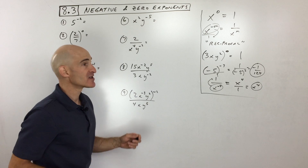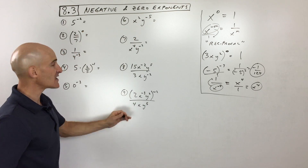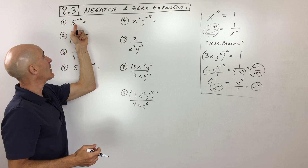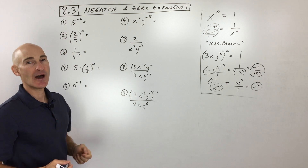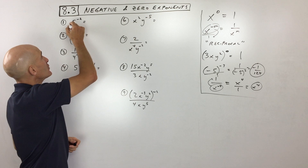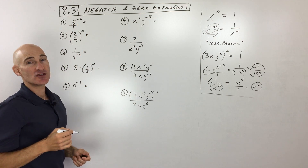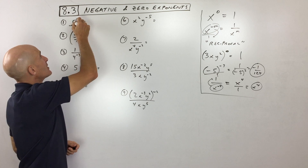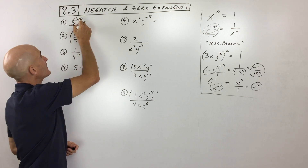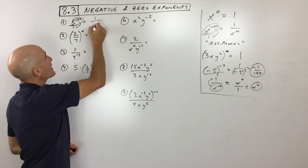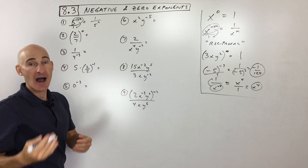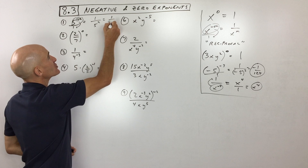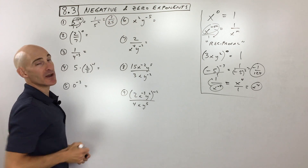Let's get into some more challenging examples. For number 1, we've got 5 to the negative 2. You can put it over 1, and the negative exponent tells us to move it to the other side of the fraction bar and make it a positive exponent. 5 squared is 5 times 5, which is 25, so this is 1/25.